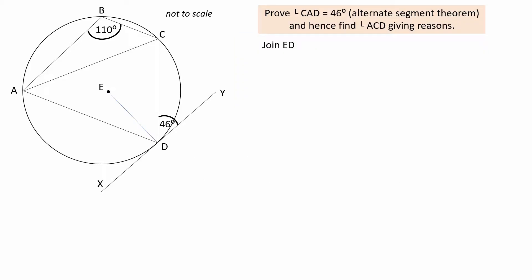Start by drawing the radius ED. Then angle EDY equals 90 degrees. Because a radius and a tangent, which meet at a point on the circumference, always makes an angle of 90 degrees.